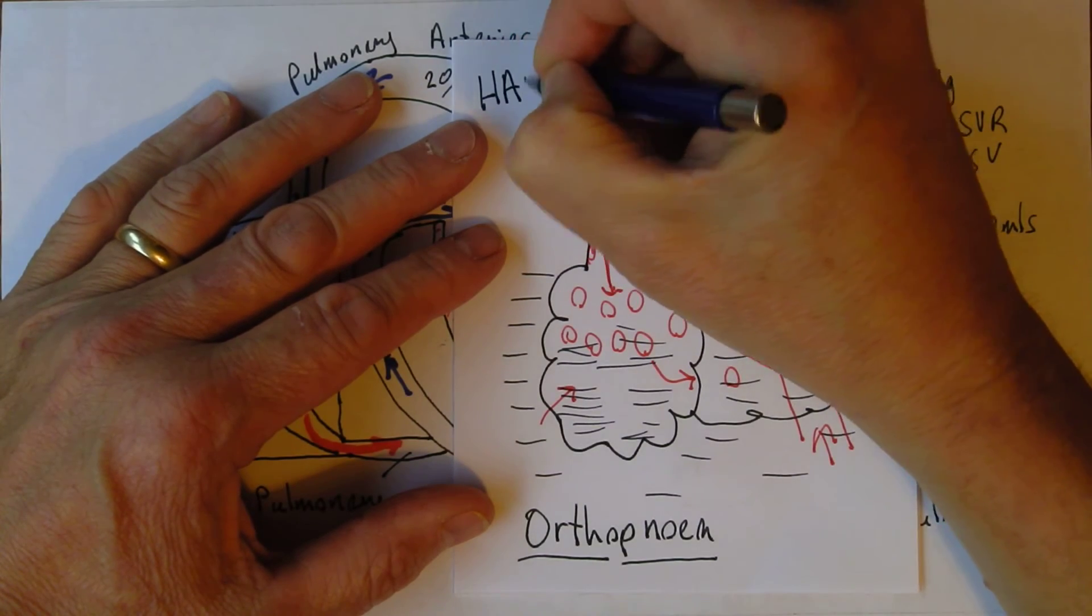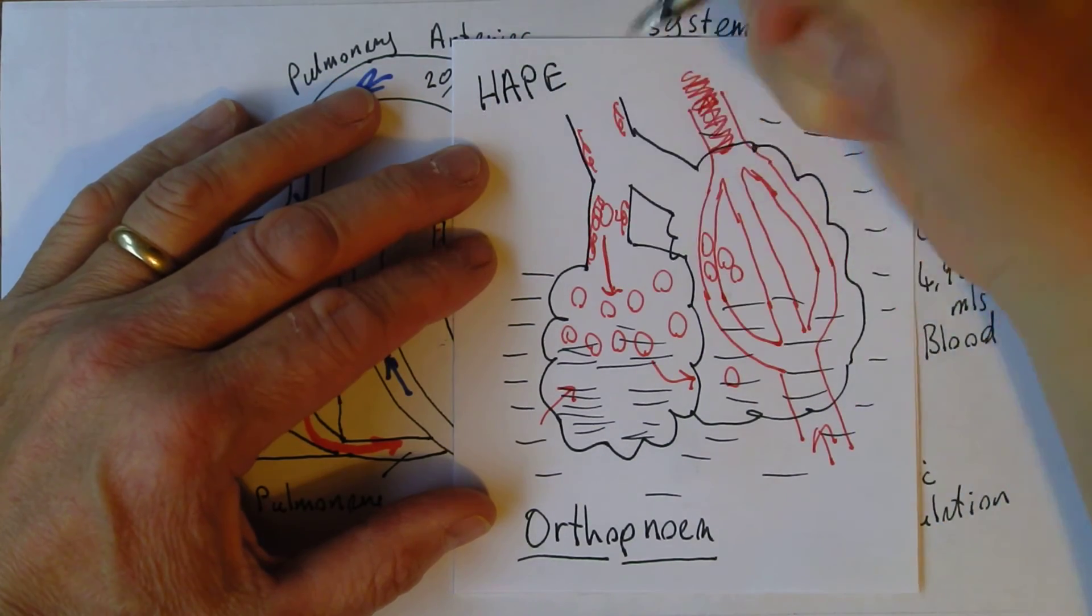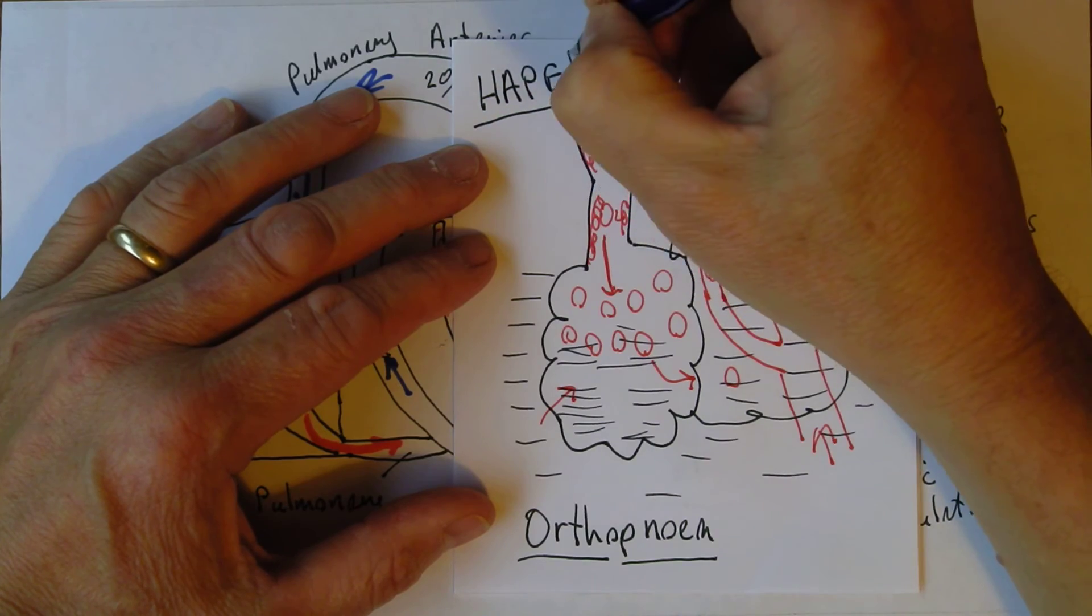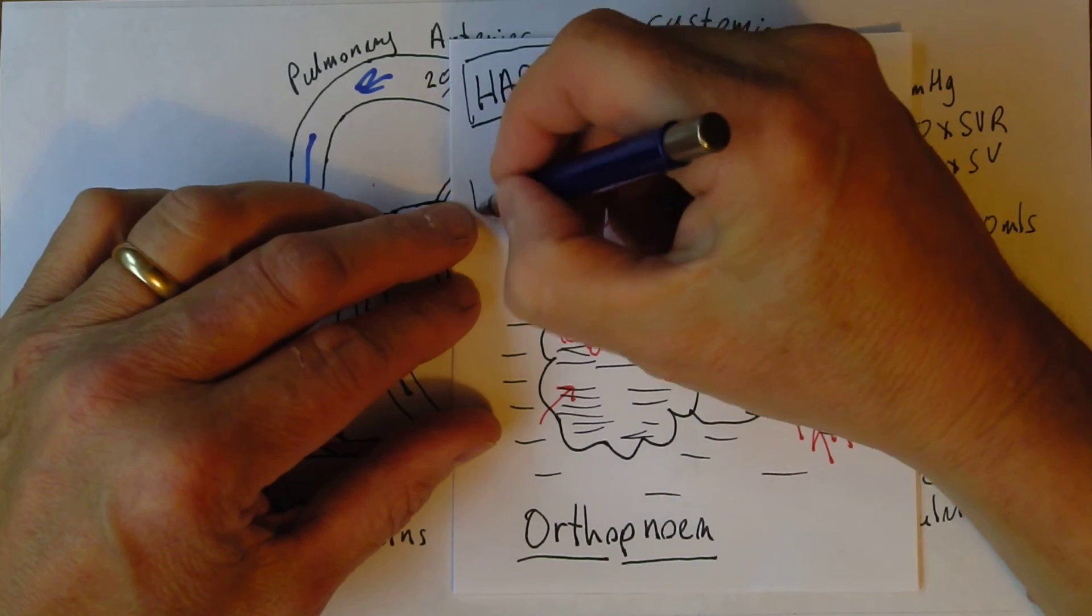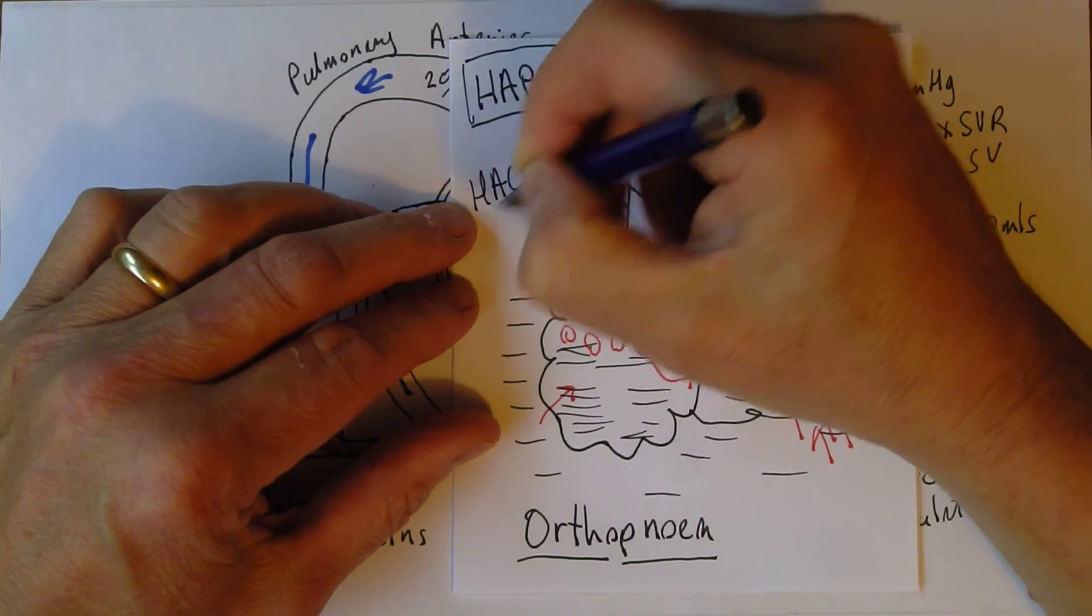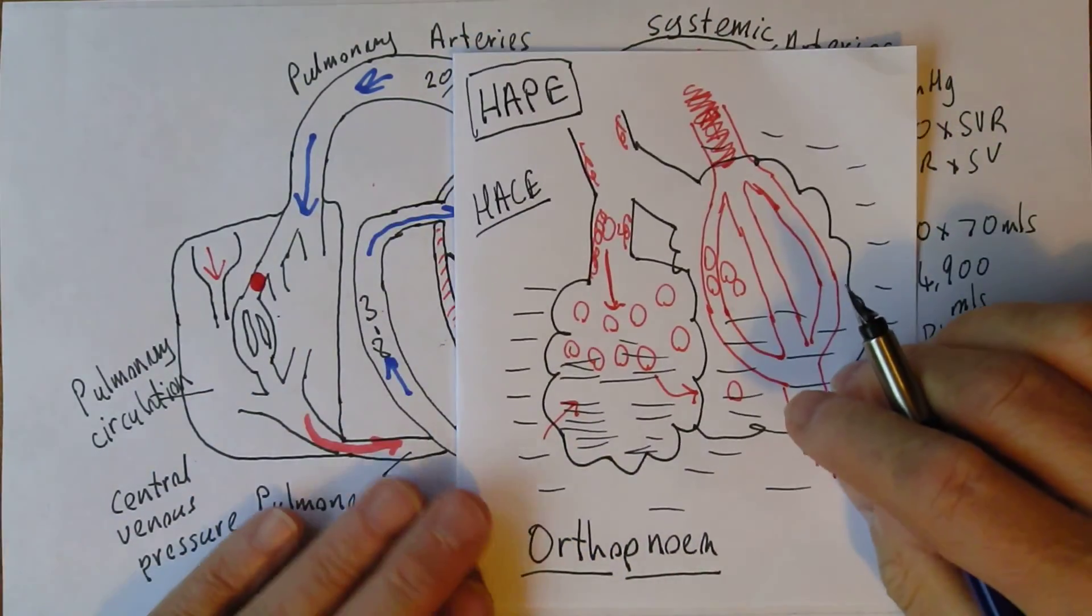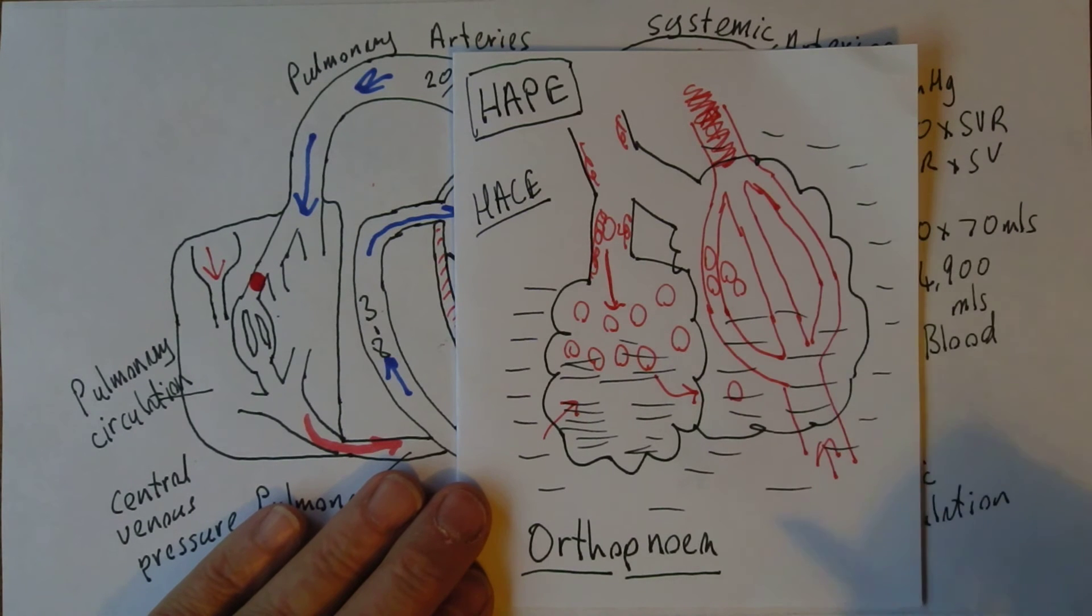You can get it in high altitude pulmonary oedema as well. High altitude pulmonary oedema, so called HAPE and we use the American E for oedema. The other one of course is high altitude cerebral oedema HACE. So the pink frothy sputum, the orthopnea, features of the severe pulmonary oedema.